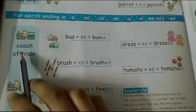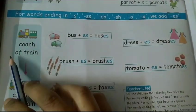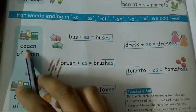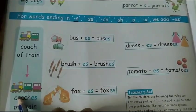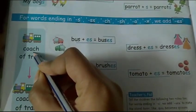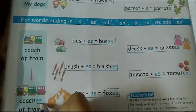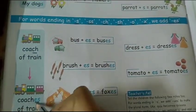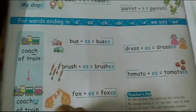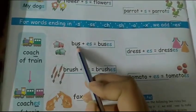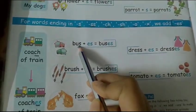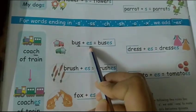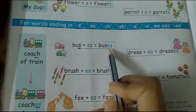Like here, it's a coach of train. Here it's 'ch'. You have to change it to plural form, so you have to write 'es': coaches. Like here, bus ends in 's', so we add 'es' also: buses.